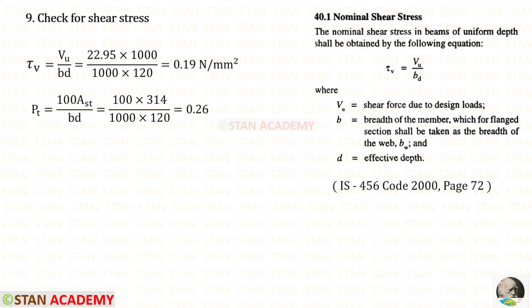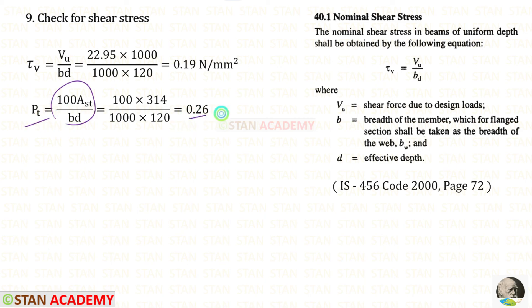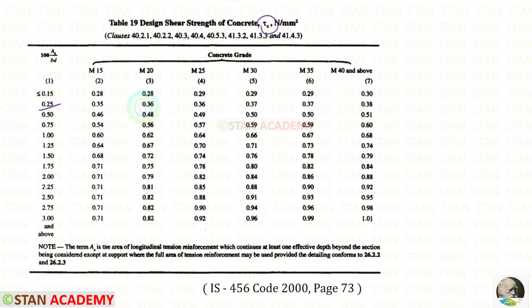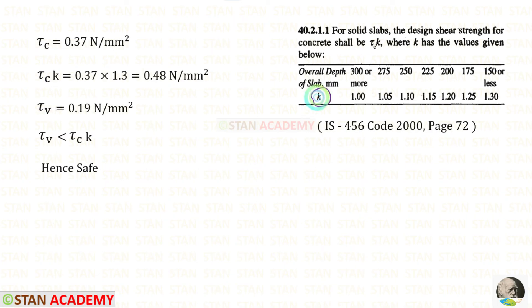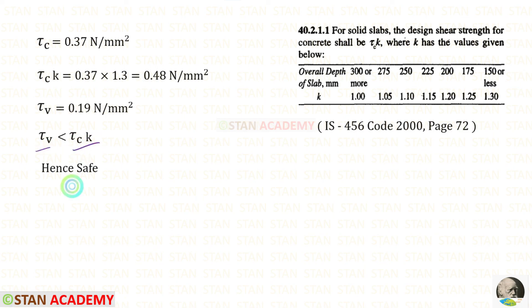Now let us apply the check for shear stress. The factored shear force Vu is 22.95 kilonewton. Using the formula, the nominal shear stress τv is 0.19 N/mm². The percentage of steel is calculated as 0.26%. From the code table, τc for 0.25% is 0.36, so for 0.26% we take approximately 0.37 N/mm². Since the overall depth is less than 150 mm, the enhancement factor K is 1.3. Therefore K·τc = 0.48 N/mm². Since τv = 0.19 is less than K·τc = 0.48, the section is safe in shear.